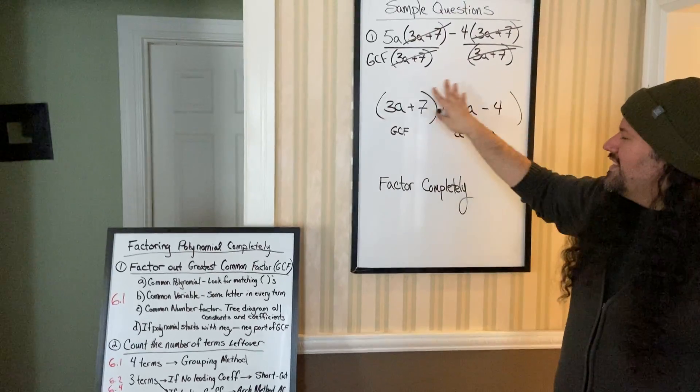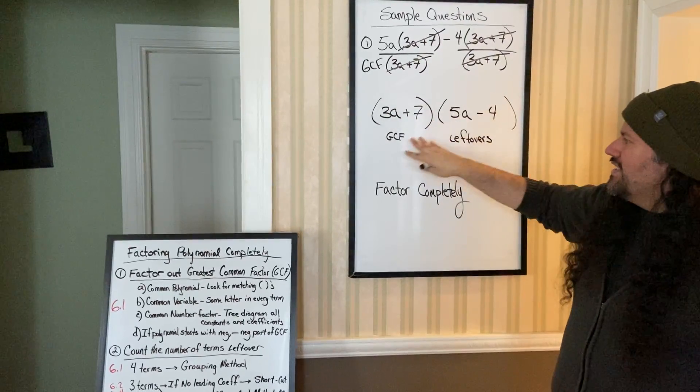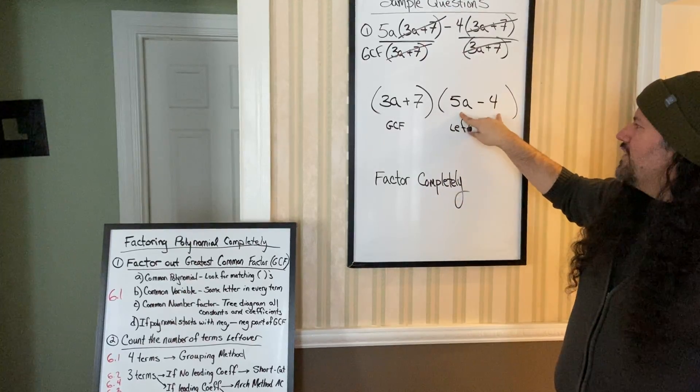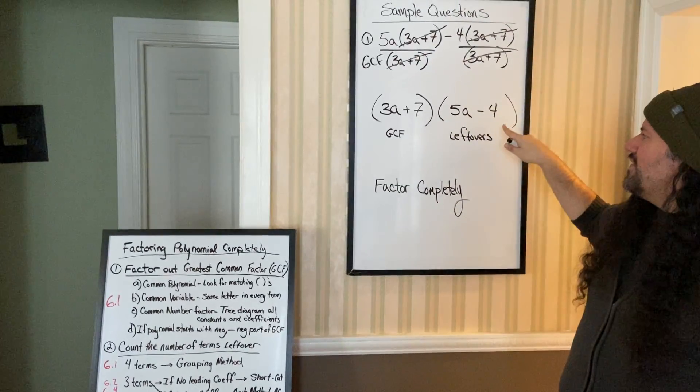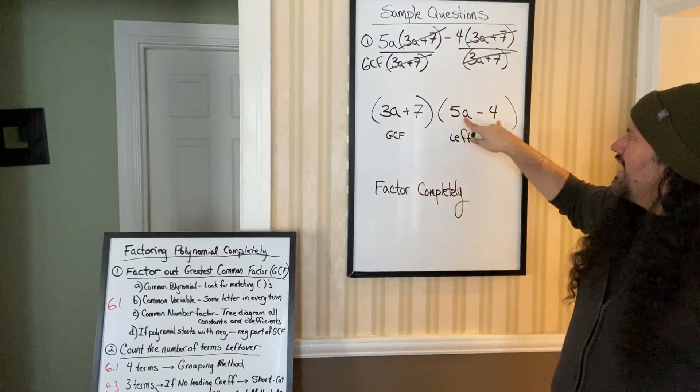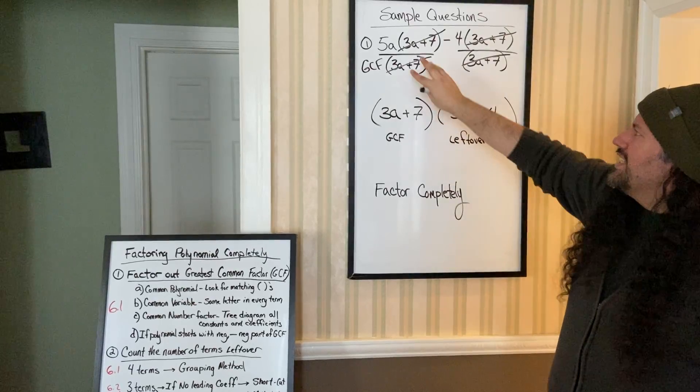So this is factored completely. Your GCF is in front, your leftovers in a set of parentheses. Because this times this would make this.